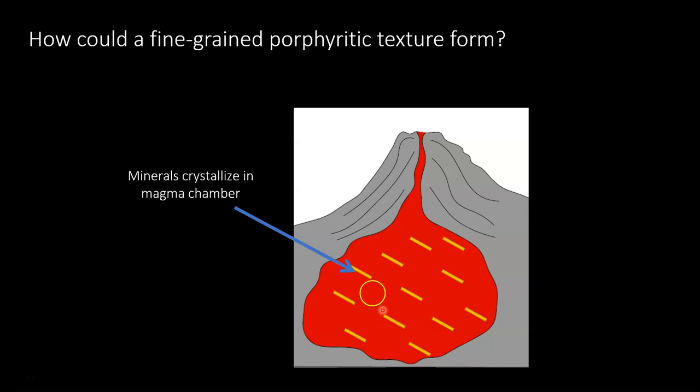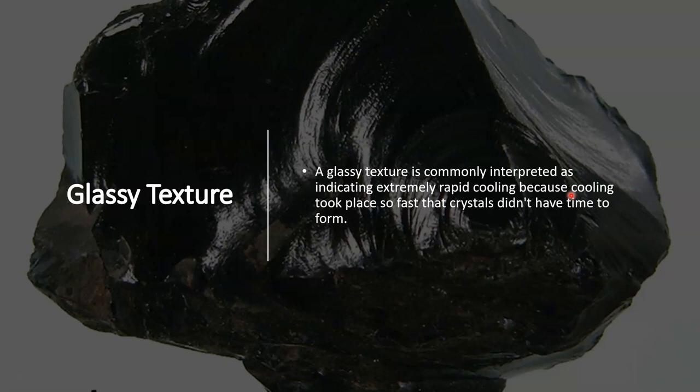With coarse-grained porphyritic, everything is still crystallizing below ground, but the larger crystals in a particular rock are crystallizing prior to the smaller crystals — they started crystallizing first. Glassy texture happens when you have very rapid cooling, so the rock cools almost instantly and you get a very nice glassy, smooth texture that shines as you see in this photograph.